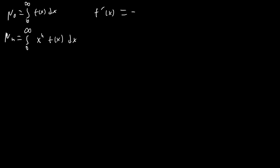f'(x) equals negative 3f(x) plus 6f(2x). So that means if we're able to get f'(x) on the inside here, then we can get an expression in terms of μ(n). What I'm going to do is integration by parts, because when I integrate x^n I'm going to end up with something in terms of μ(n+1), and when I differentiate f(x) I can just turn it back into f'(x) again.